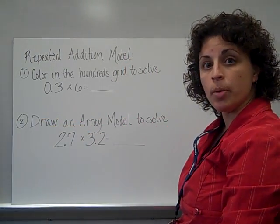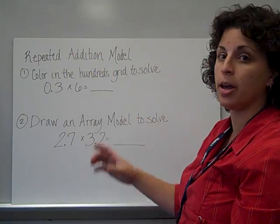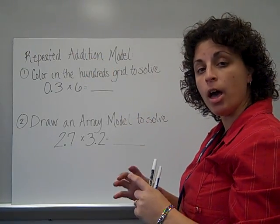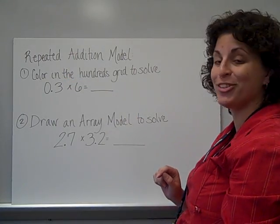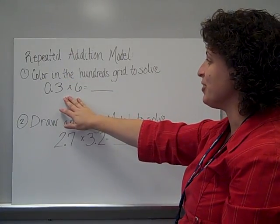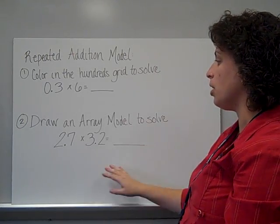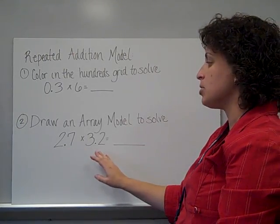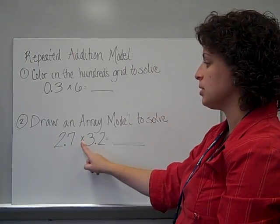I would like for you to use these two models to solve in your math journal. We'll start with the repeated addition model, and I should have given you some hundreds grids to glue in your math journal so that you can color in the hundreds grid to solve 0.3 times 6, and then I want you to draw an array model to solve 2.7 times 3.2 tenths, columns times rows.